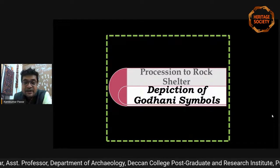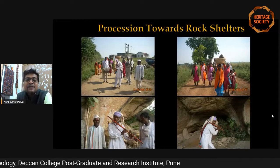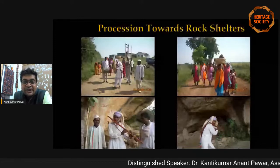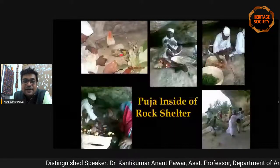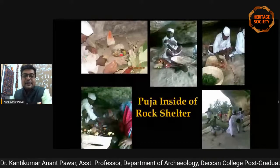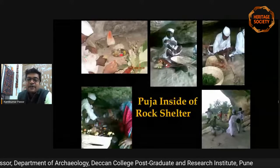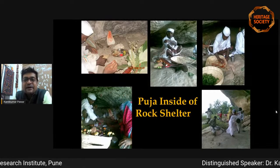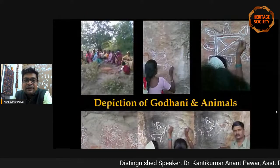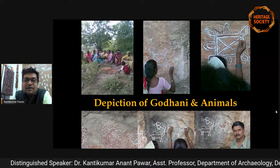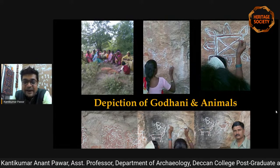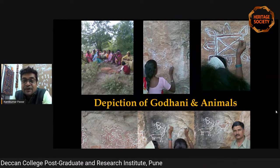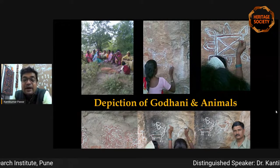Understanding social behavioral phenomena is very important here. Every Diwali, the Gonds process from their village toward the rock shelter with singing and dancing. Inside the rock shelter, the Shaman — also called Pujari or Bhagat — sits inside, makes some symbols, and starts puja there, with dancing and singing continuing. Then these Gond people draw some symbols inside the rock panel of the shelter without harming the ancient symbols. This symbol is known as Godani — a combination of two words: Go (cow) and Dhan (wealth). They depict this Godani symbol as well as animal symbols.